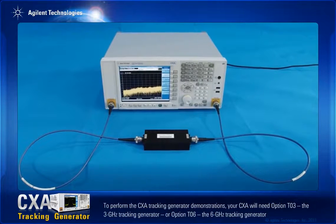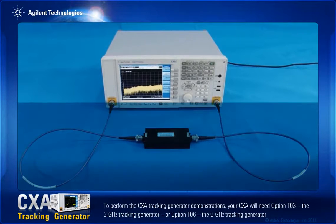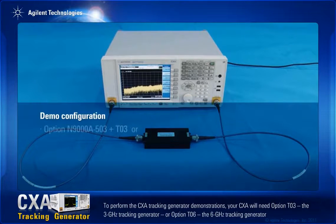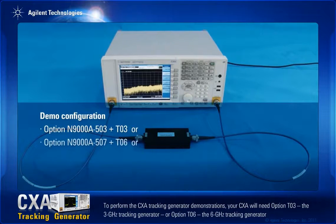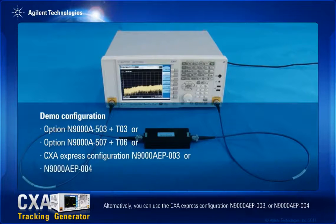To perform the CXA tracking generator demonstrations, your CXA will need option T03, the 3 GHz tracking generator, or option T06, the 6 GHz tracking generator. Alternatively, you can use the CXA Express configuration N9000A-EP003 or N9000A-EP004.